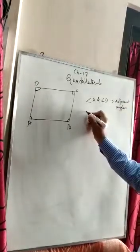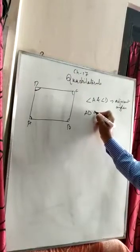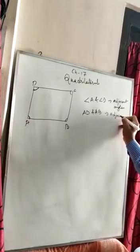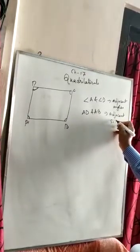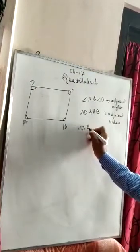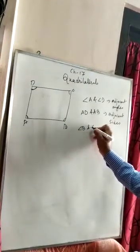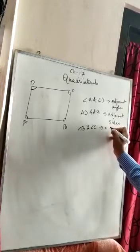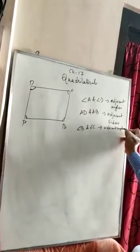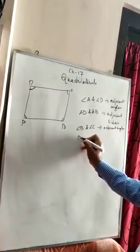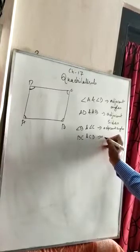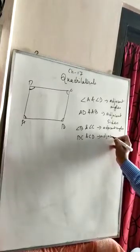Sides AD and AB are adjacent sides. Similarly, angle B and angle C are adjacent angles, and sides BC and CD are adjacent sides.